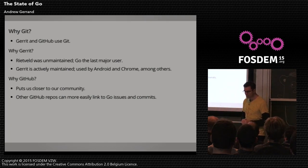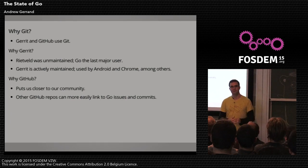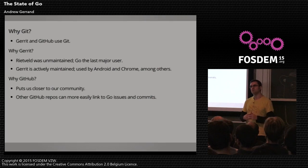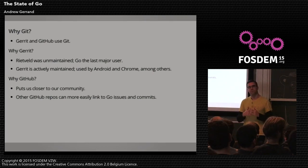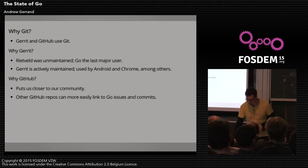Why did we move our issues from Google Code to GitHub? Basically it puts us closer to our community, which by and large uses GitHub for open source development. It also means that other GitHub repos can mention a Go commit by hash or a Go issue in their own issues and commits, so we can have a more tightly coupled relationship with other projects that use the Go core.